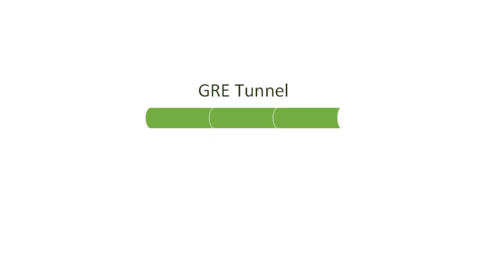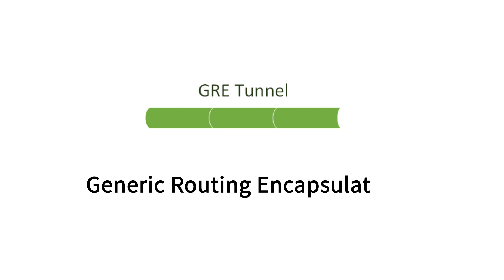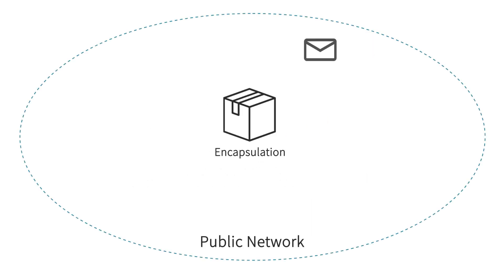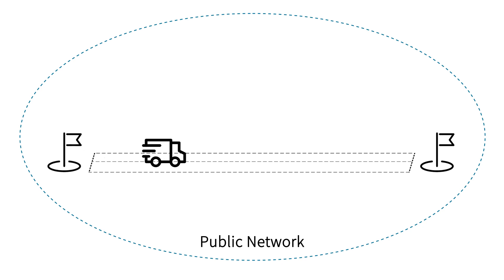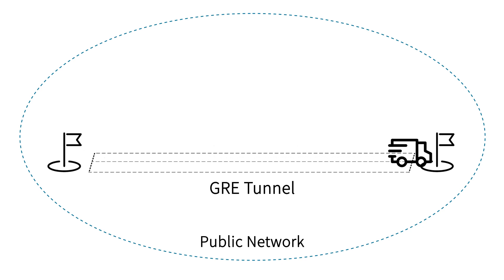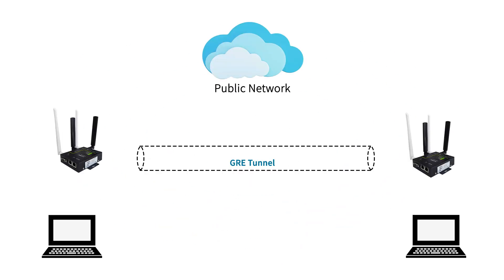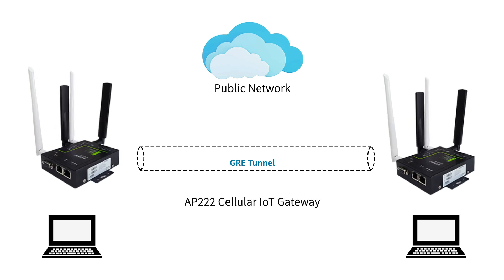GRE Tunnel, known as Generic Routing Encapsulation, is a virtual private network technology that can connect two private networks by encapsulating private network packets in the public network. Let's see how to configure a GRE tunnel between two AVCOM AP222 cellular IoT gateways.